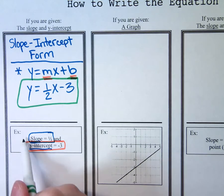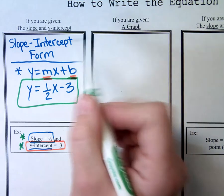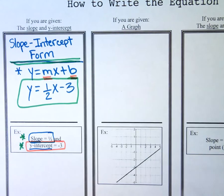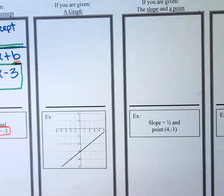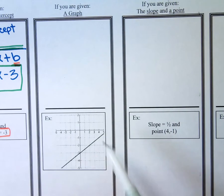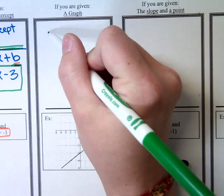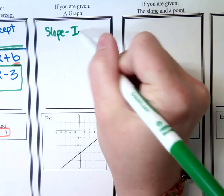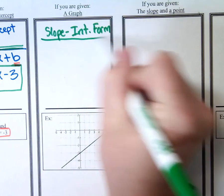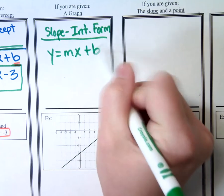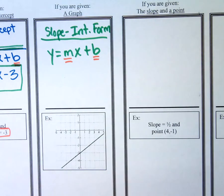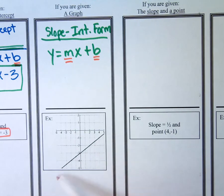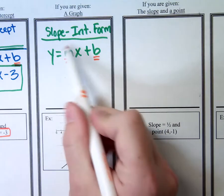So if you're starting off with the slope and the y-intercept, you can jump straight into slope-intercept form. This next one: we want to write an equation if we're given a graph. If I'm ever given a graph of a diagonal line, I know that every diagonal line has an x and a y in the equation, so I'm going to start off with slope-intercept form again — y equals mx plus b. I only need to know the slope and b, the y-intercept. So let's find the slope.